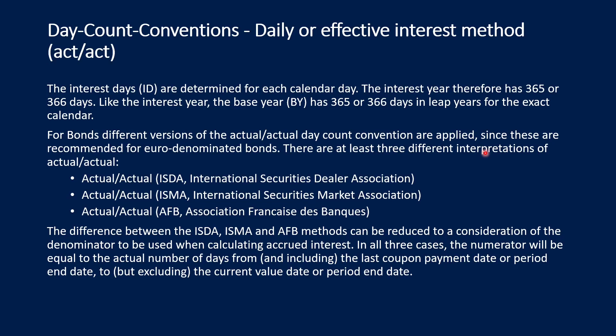The daily or effective interest method, Actual/Actual, works as follows: interest days are determined for each calendar day by simply counting in the calendar. The interest year therefore has 365 or 366 days. Like the interest year, the base year also has 365 or 366 days in leap years for the exact calendar. For bonds, different versions of the Actual/Actual day count convention are applied, since these are recommended for euro-denominated bonds. There are at least three interpretations: Actual/Actual as per ISDA (International Security Dealers Association), ISMA (International Securities Market Association), and AFB (Association Française de Banques).